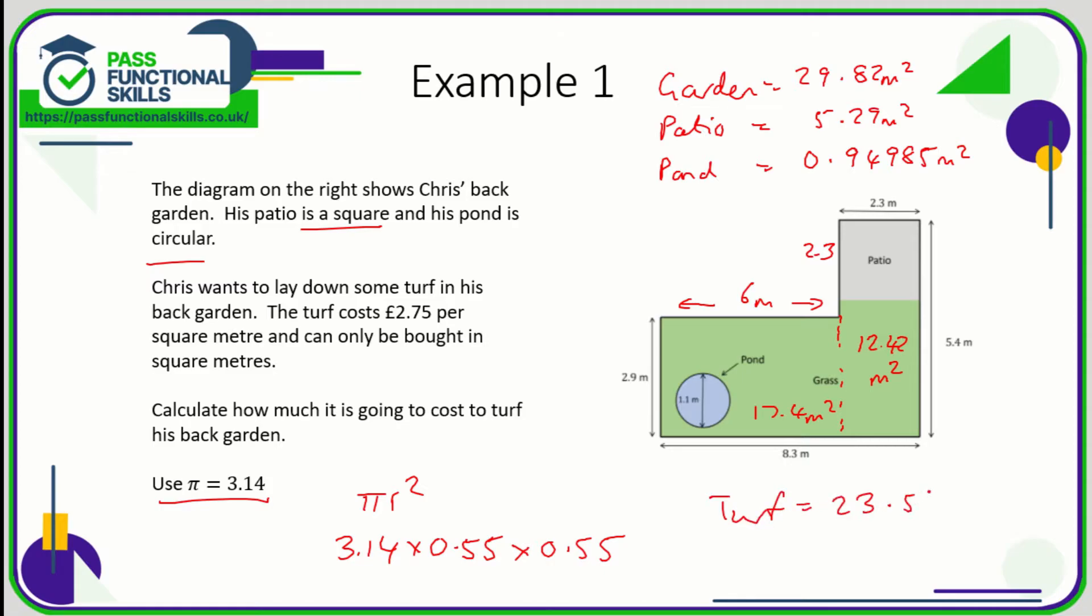So the turfed area is going to be 23.58015 square meters. But turf can only be bought per square meter, so we're going to have to round that up to 24. 23 square meters won't be enough, so we want 24 square meters, and it's £2.75 per square meter. So our final calculation is £2.75 multiplied by 24, which comes to a total of £66.